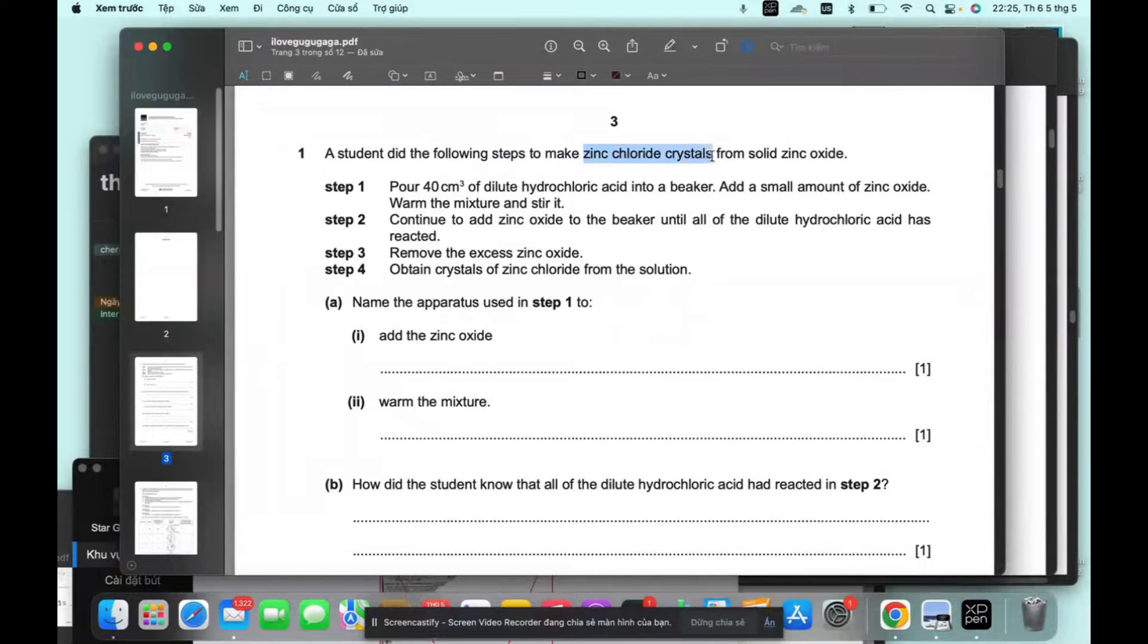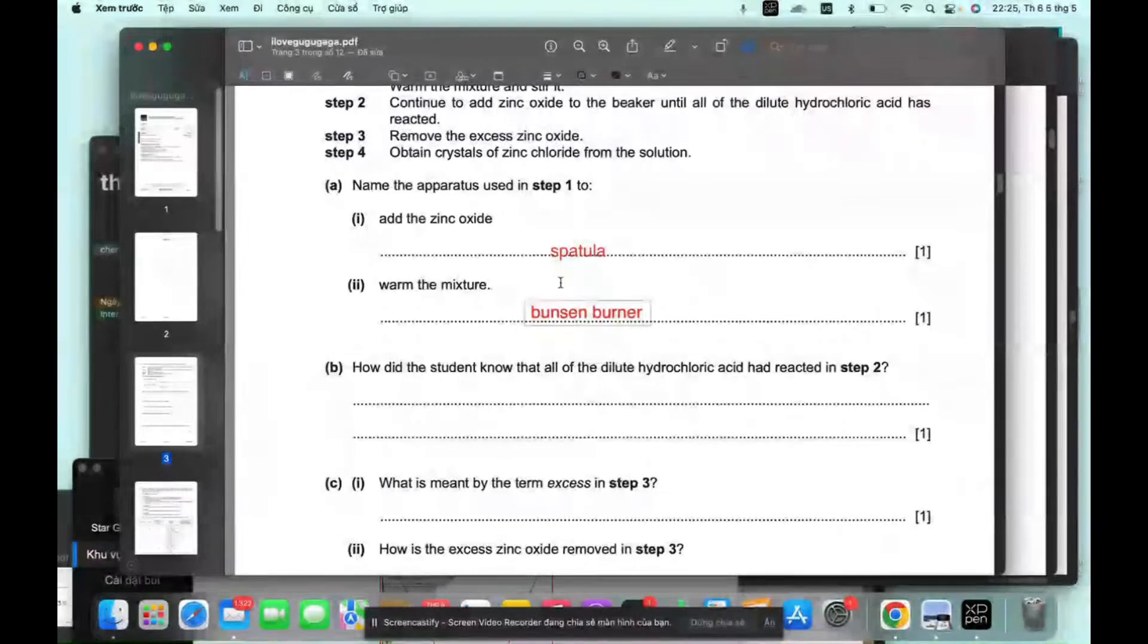Zinc chloride crystal and solid zinc oxide. Okay, so first we add the zinc oxide. Zinc oxide is a solid, a powdered solid, so we use spatula. And we warm the mixture using Bunsen burner. We can't use a kettle because this kettle is not for chemicals.